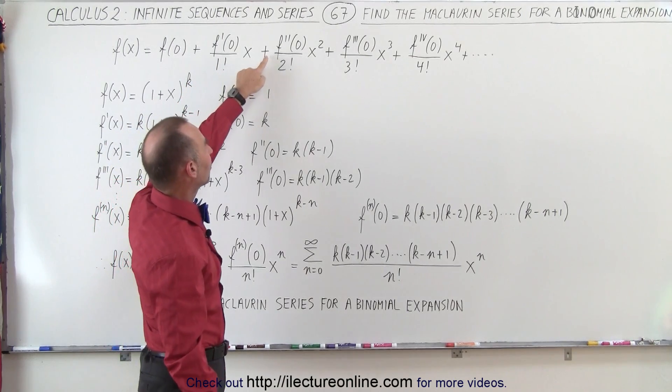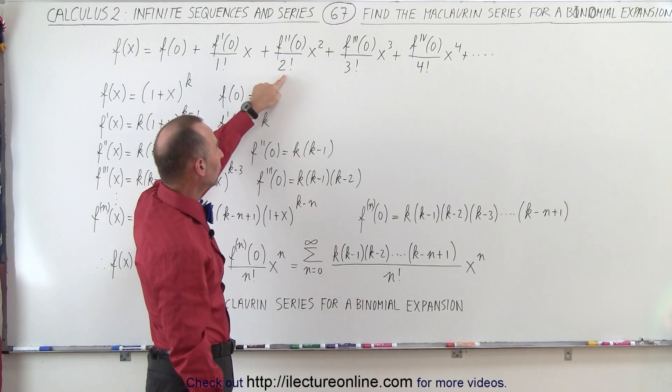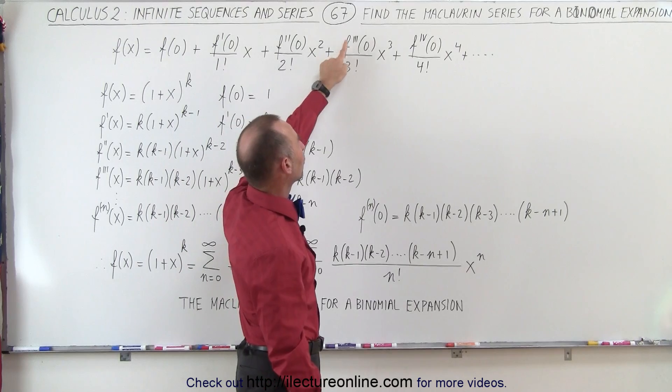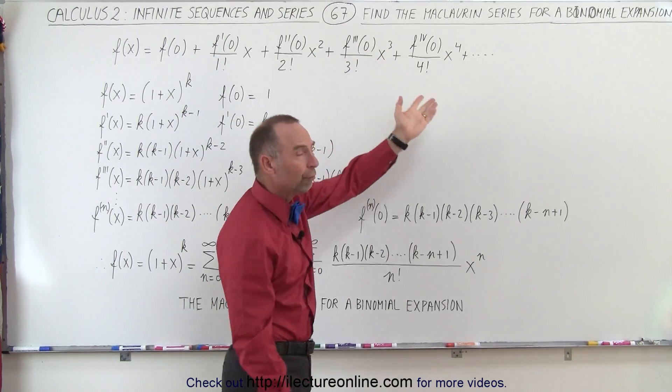plus the second derivative of the function evaluated at 0 divided by 2 factorial times x squared plus the third derivative of the function evaluated at 0 divided by 3 factorial times x cubed and so forth.